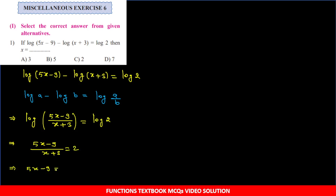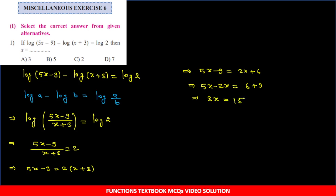So 5x - 9 = 2(x + 3), which gives 5x - 9 = 2x + 6. Moving terms: 5x - 2x = 3x, and 6 + 9 = 15. So x = 15/3 = 5. Option B correct. Easy question. Remember: log ko log se cancel tabhi kar sakte hain jab base same hota hai. Agar base same nahi hai to base change property se same bana sakte hain.